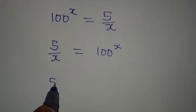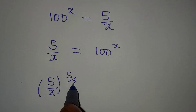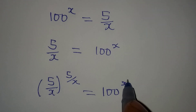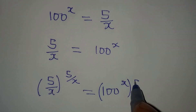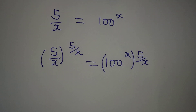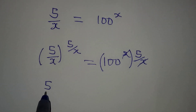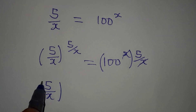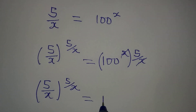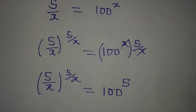So we have (5/x) to the power of (5/x), and then 100 to the power of x, raised to the power of 5/x. The x and 5/x simplify, leaving us with (5/x) to the power of (5/x) equal to 100 to the power of 5.